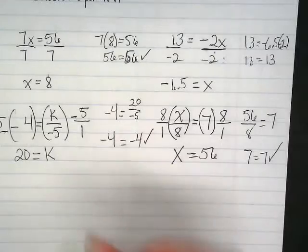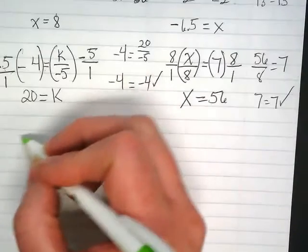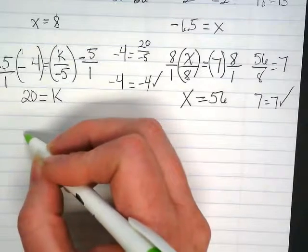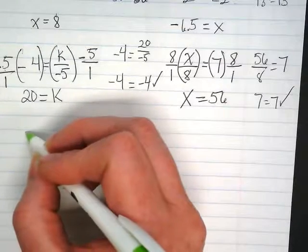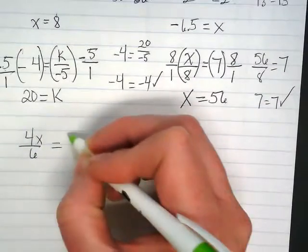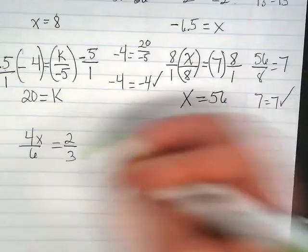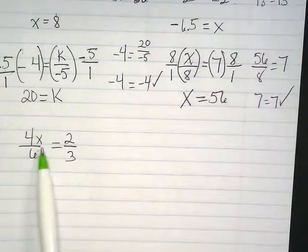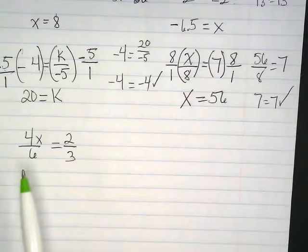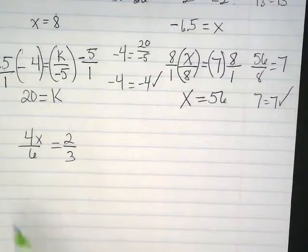So for a little bit trickier work, let's work on a couple problems that have a fraction or 2 in the problem itself. What if I have 4x over 6 equals 2 over 3? Remember, the goal is to get that x isolated. So what I'm going to do is multiply by the reciprocal of the fraction that it's with.